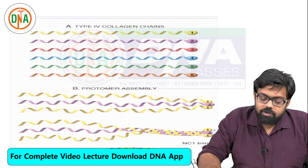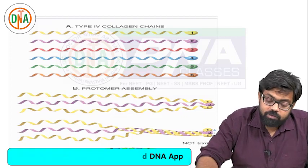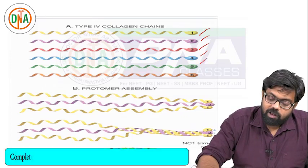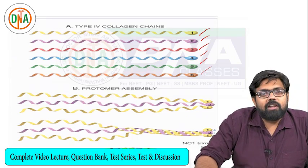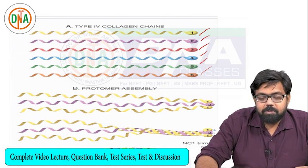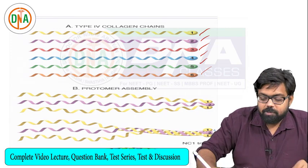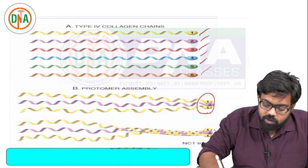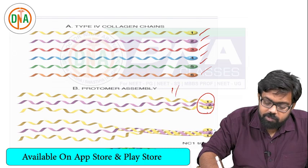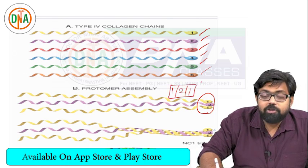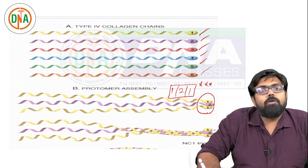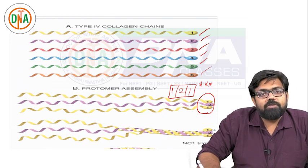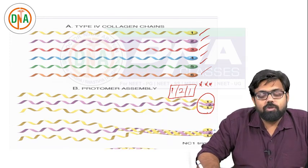The most common trimer - as mentioned, there are alpha 1, alpha 2, alpha 3, alpha 4, and alpha 6 types of alpha chains present in the glomerular basement membrane. The most common trimer is alpha 1, alpha 2, and alpha 1. This has not been asked as a question yet, but it is a very important topic and you can expect this as an MCQ in the near future.